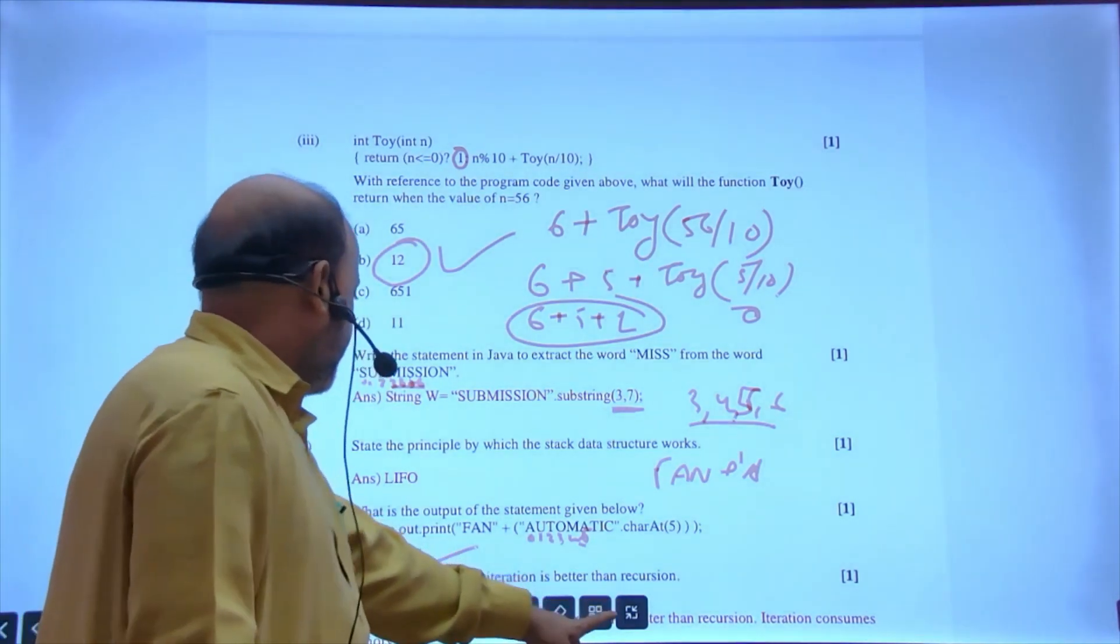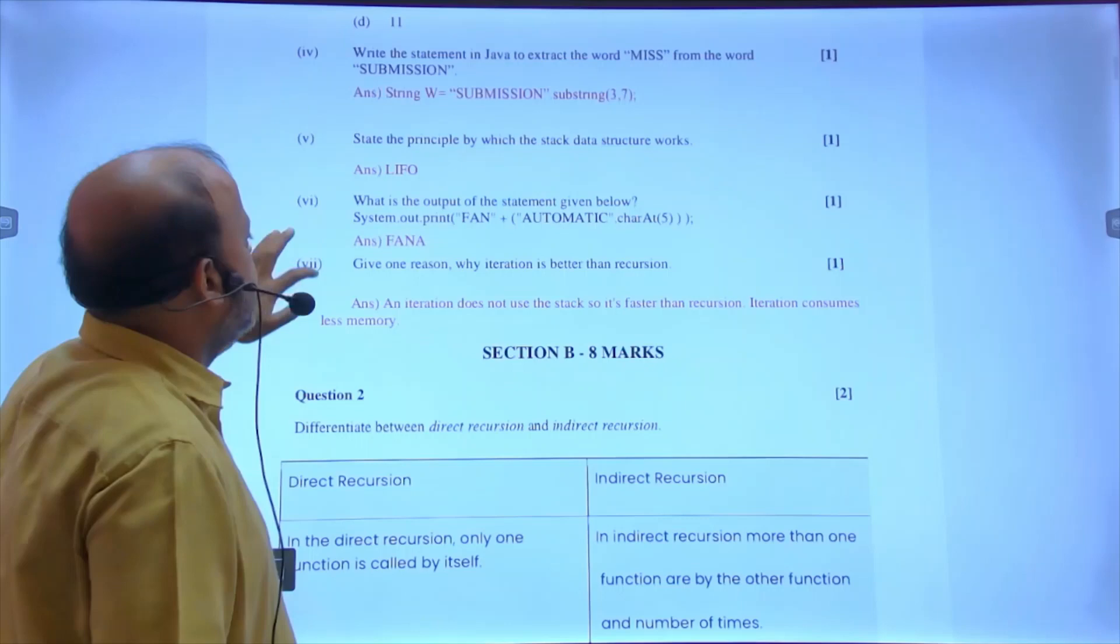So 'fan' is string plus 'a' is character, so they will concatenate. You'll get 'fana'. Next: give one reason why iteration is better than recursion.